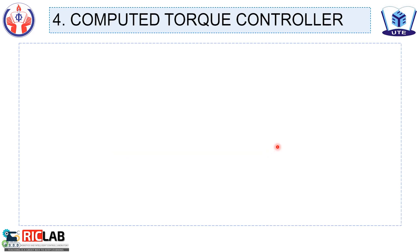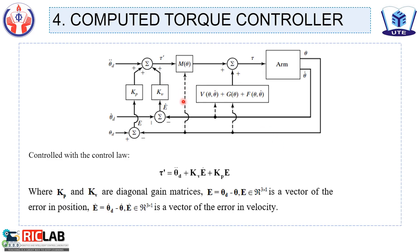In part 4, we conduct to build a computed torque controller. From the closed system, we have a controller with a control law like this: tau equals theta double dot d plus Kp E plus Kv E dot. Where Kp and Kv are diagonal gain matrices.